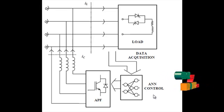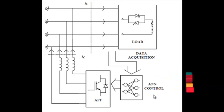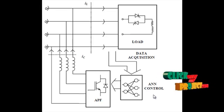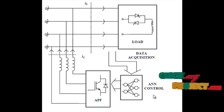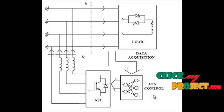The artificial neural network gets the current value from the load, then changes its signal to correct the fundamental frequency via the shunt APF. The shunt APF then stops sending current to the main circuit, so the fundamental frequency is maintained in the circuit. As a result, the output achieves low harmonics and the best accurate result.